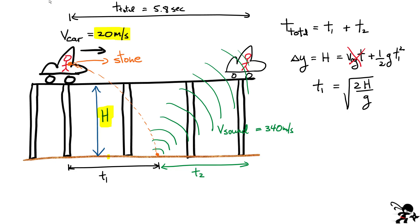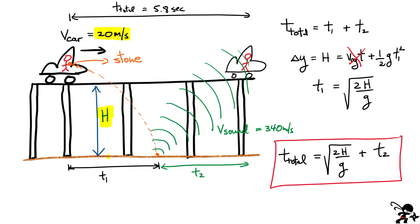Substituting T1 into the first equation gives: T_total = √(2h/g) + T2. This is my first boxed equation. There are two unknowns: h and T2. To find h, I also need to solve for T2, so I need a second equation linking both variables. That means I'll look at the sound propagation part to get a second equation.